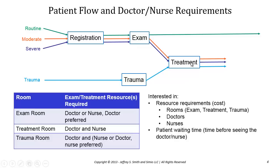Similarly, in the treatment room, the patient needs to first have access to the treatment room and then have access to both a doctor and a nurse. Our performance metrics of interest, in addition to cost, are patient waiting time — in particular, the waiting time before seeing the doctor, from when they arrive until they see their first medical professional.